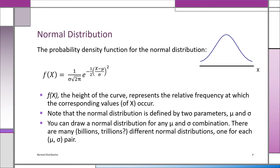Look at the formula. We have a lot of constants: 1, 2, pi, e. We have the random variable x. What's left? The only things that are not constants and not the random variable itself are mu and sigma — the parameters of the normal distribution. Mu is the mean and sigma is the standard deviation. From the very first lecture, mu and sigma are parameters of the population.